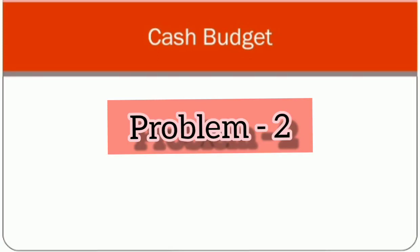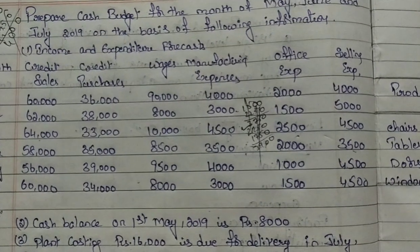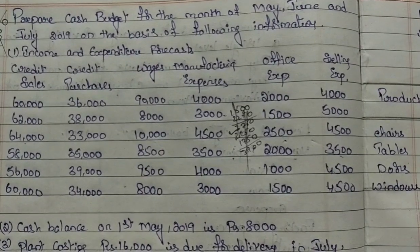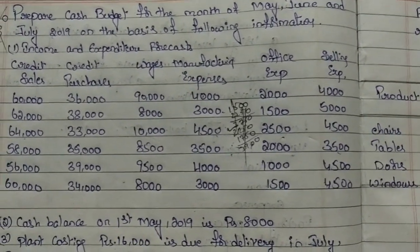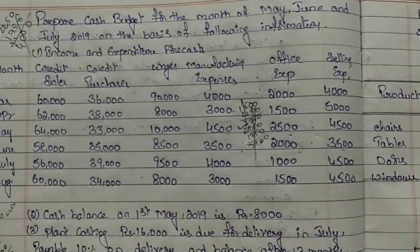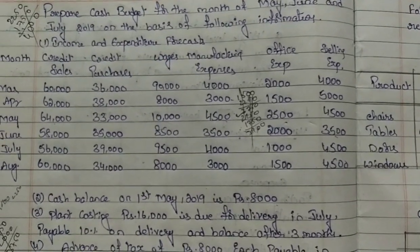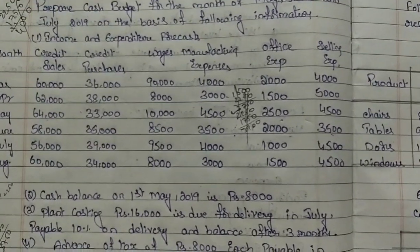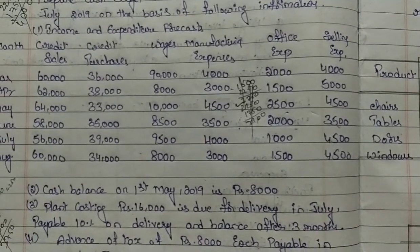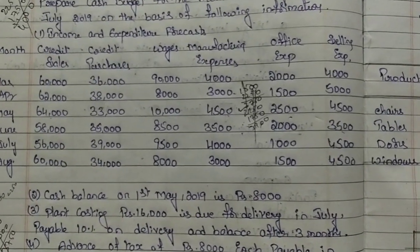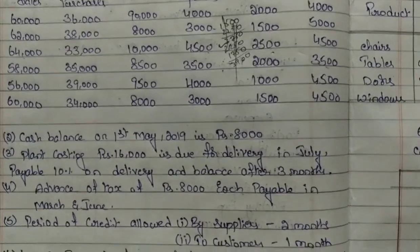Welcome back. In this video we will discuss another problem related to the preparation of cash budget. The question asks you to prepare the cash budget for the months of May, June, and July 2019 based on the following information. In the first point, income and expenditure for cash is given for six months from March to August — estimations of credit sales, credit purchases, wages, manufacturing expenses, office expenses, and selling expenses.